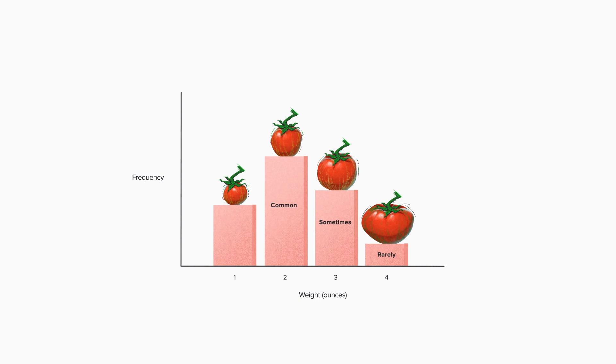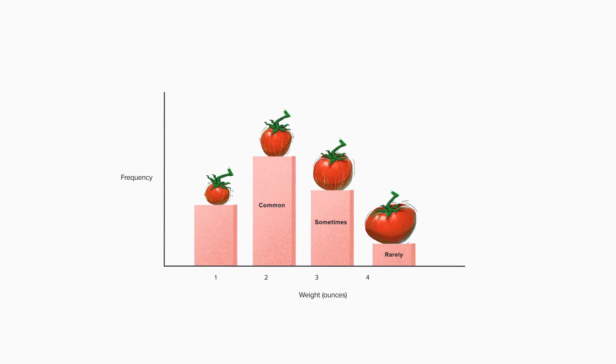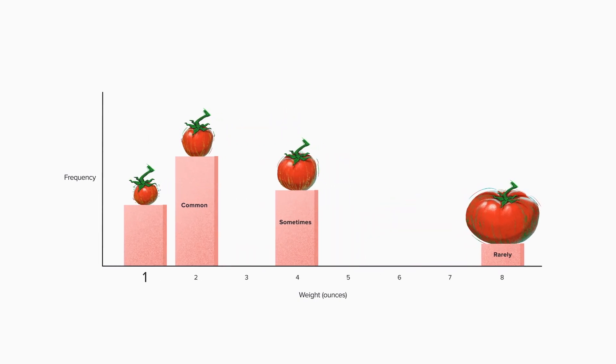Do I think that tomato variation looks like addition? One, two, three, four. Or do I think it looks like multiplication? One, two, four, eight. If I'm dreaming of the world's biggest tomato, and I am all the time, this choice determines how big I let myself dream.